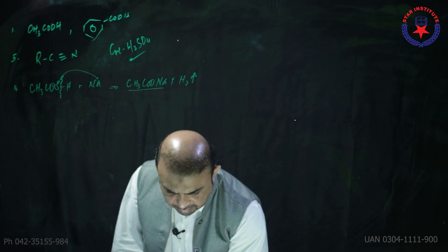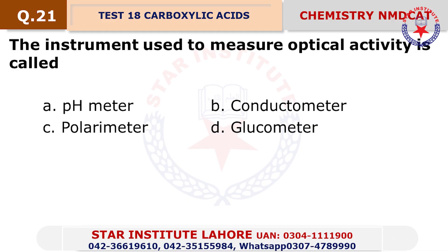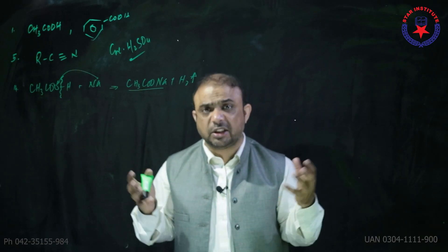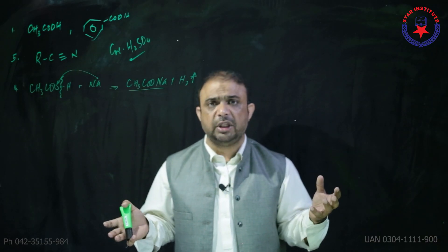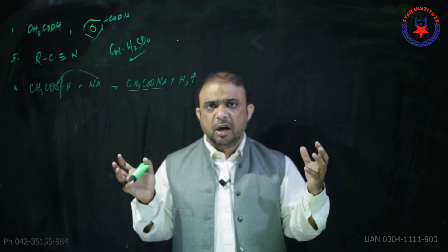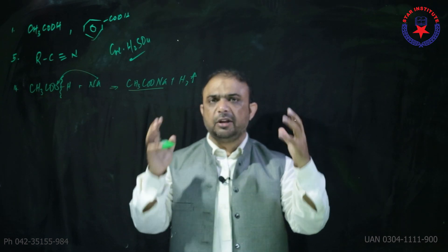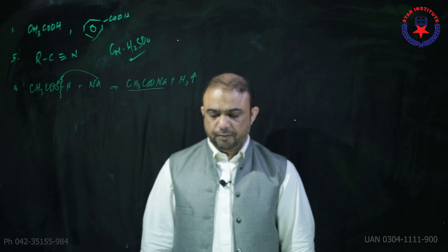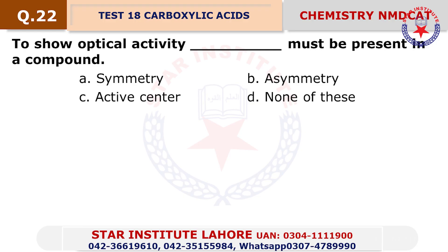Acetic acid freezes into an ice-like solid, which is called glacial acetic acid. Question number 21: The instrument used to measure optical activity is a polarimeter — choice charlie.